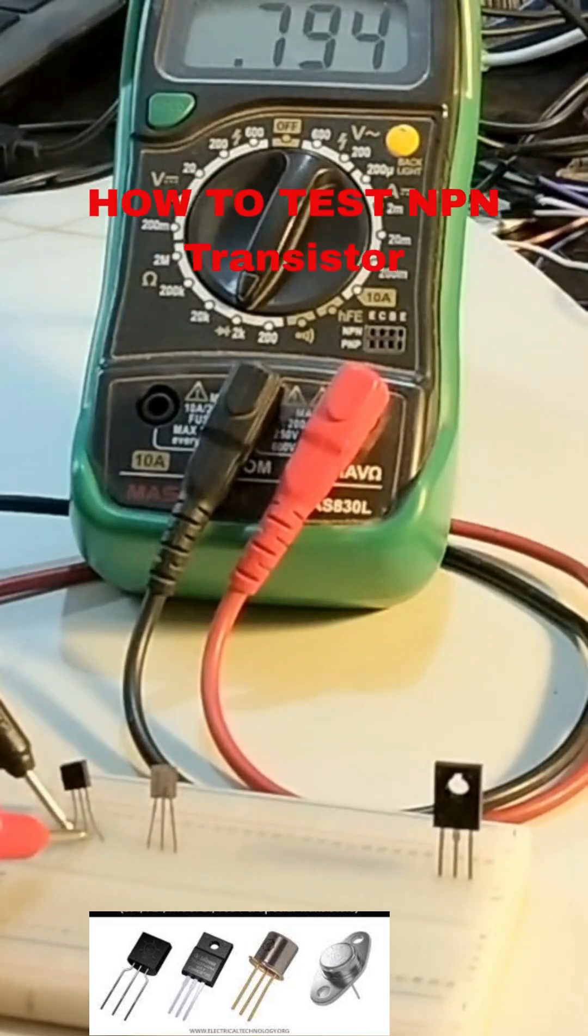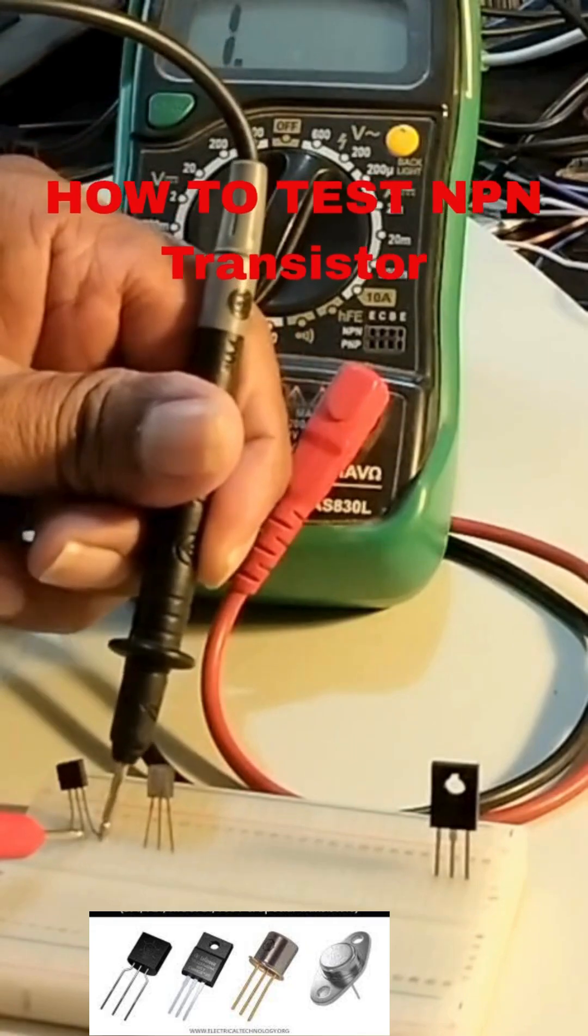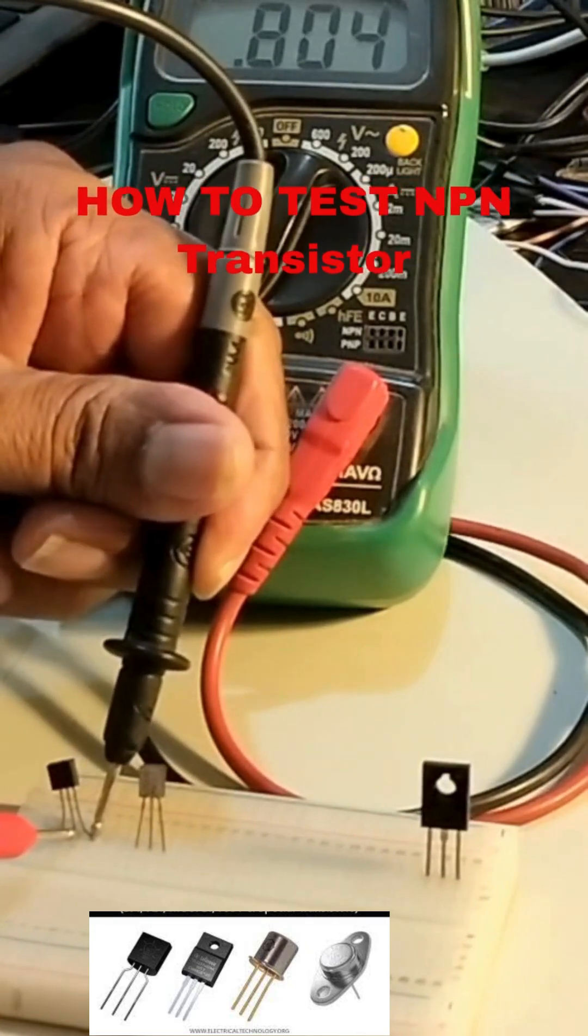I got some values that is approximately 798. Again, I am changing it to the other side. Here also approximately the value will be same. Approximately same. Okay.